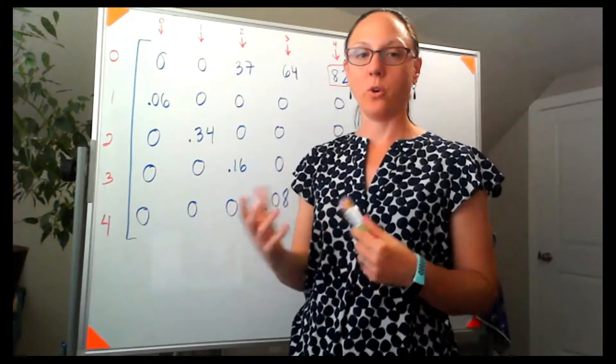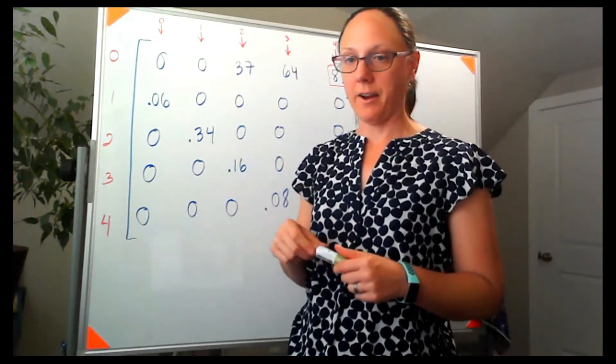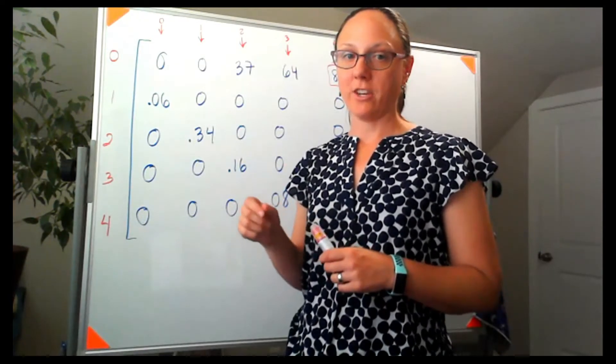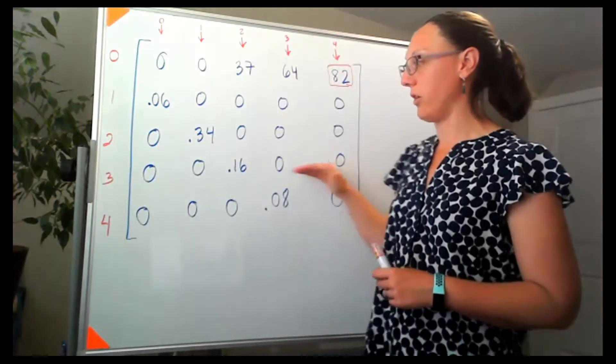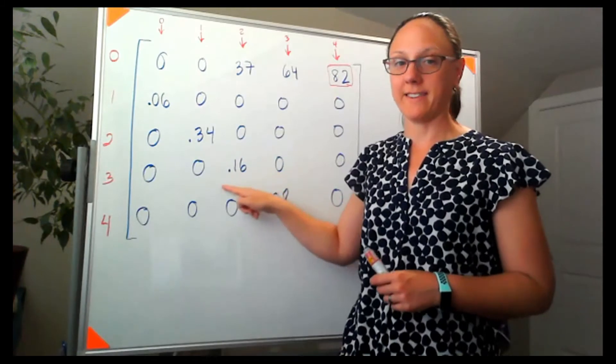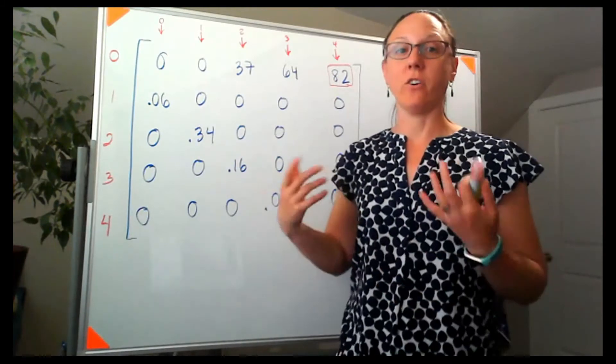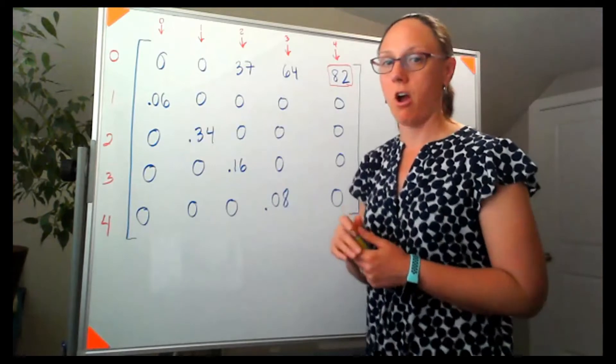So if I want to know who's surviving to age class three, I can look in my third row to find that 16%. I could also think about it in terms of the columns.